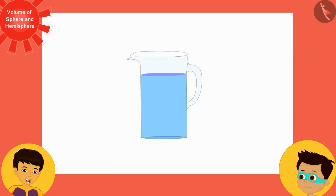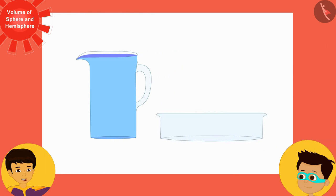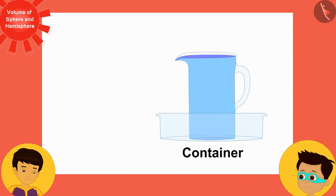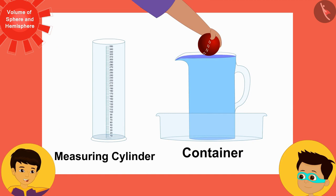First, we will fill this pot once again completely with water. Also, we will take a big container in which we will keep this vessel, and we will also need a measuring cylinder.